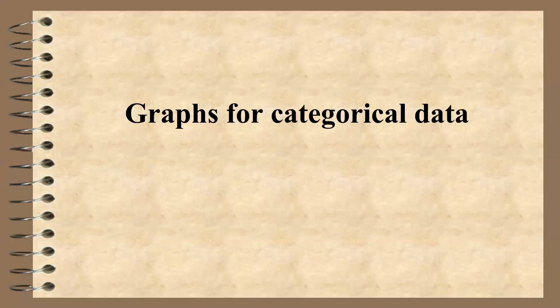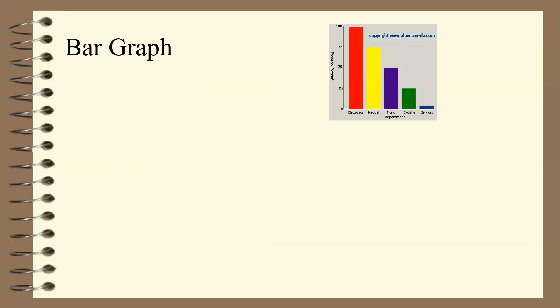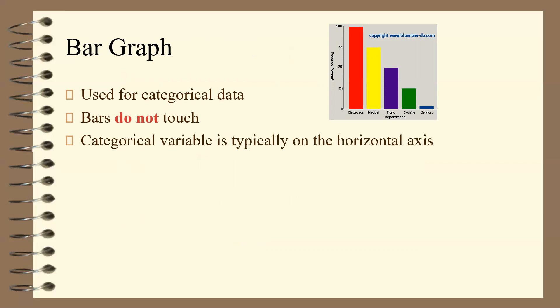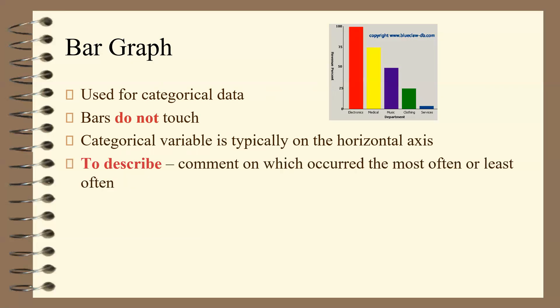Now, graphs for categorical data. A bar graph is used for categorical data, which means you need categories — not numbers on a number line. The bars do not touch. The categorical variable is typically on the horizontal axis, but it could be vertical as well. To describe a bar graph, comment on which category occurred most often or least often. A common mistake: bar graphs do not touch, because the categories such as electronics and medical are not related — the bars need to be separated.